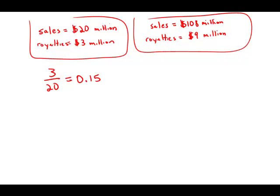The next ratio is 9 over 108. Well, 9 goes into 108 12 times. This is 1 over 12. And 1 over 12, I'm just going to approximate this. This is approximately 0.08.